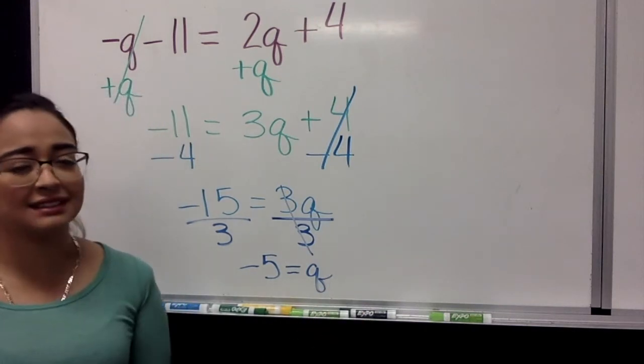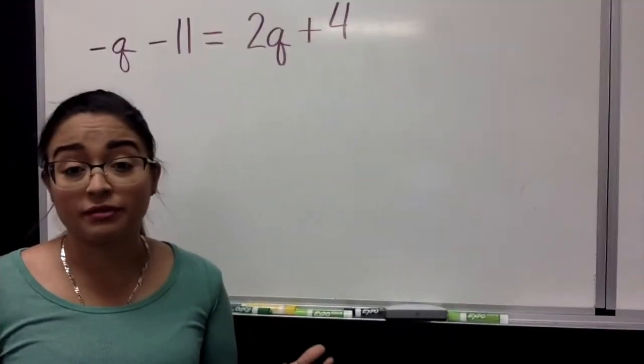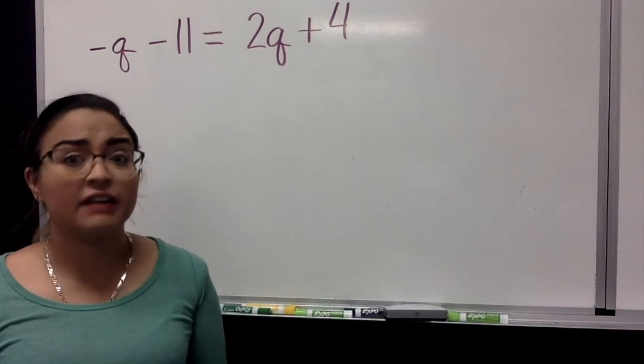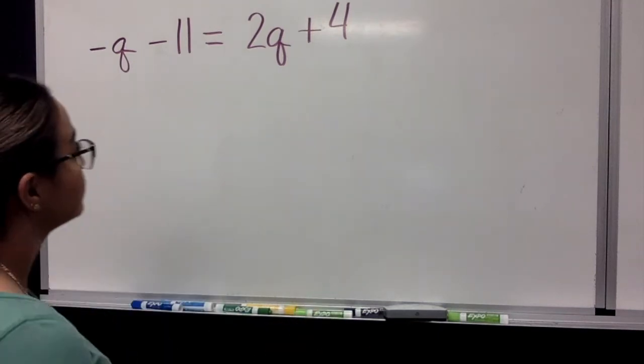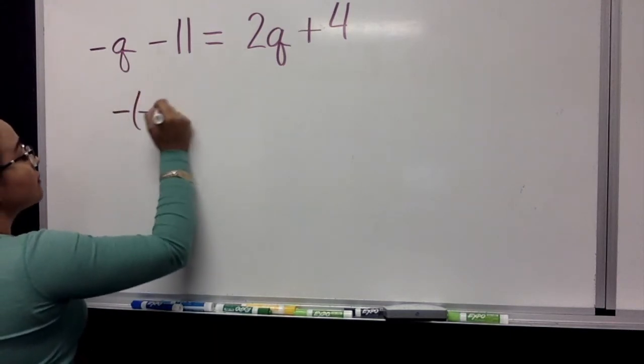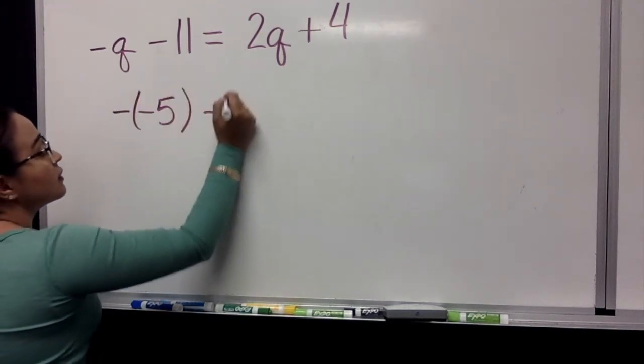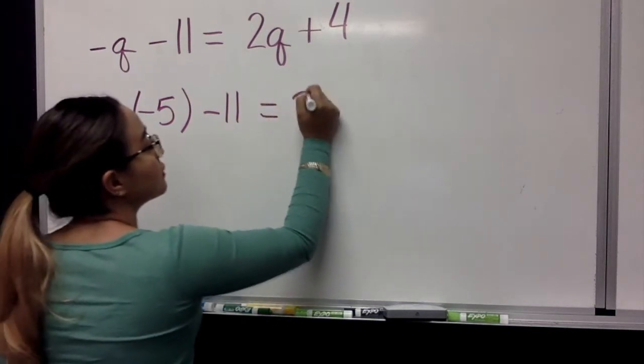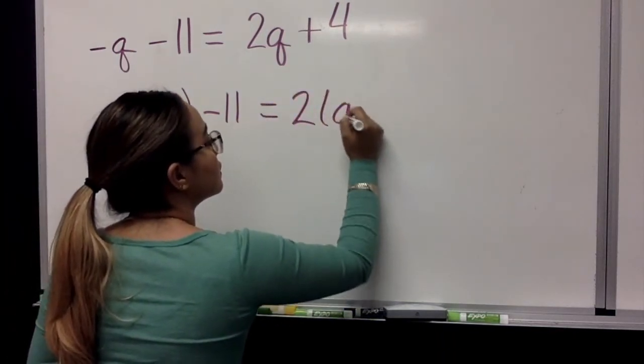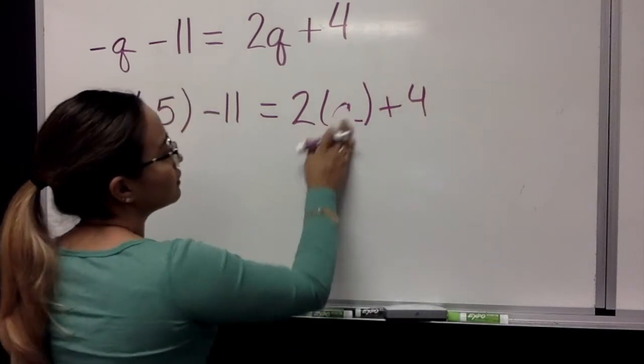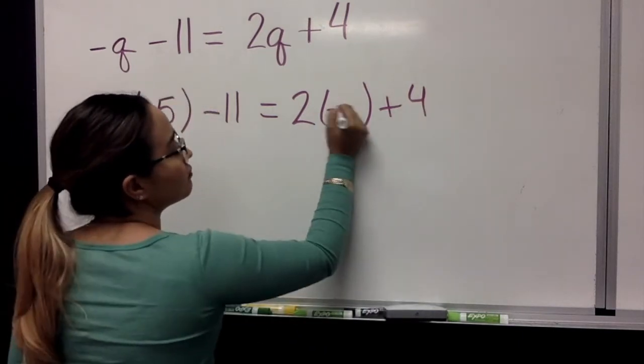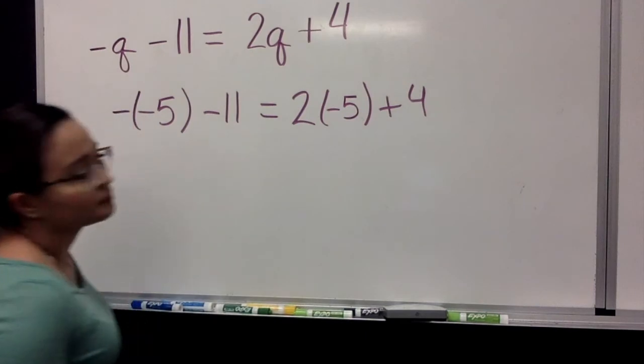Does that make sense? Now that we figured out that Q equals negative 5, let's plug in that value and see if it works out. So we have negative negative 5.